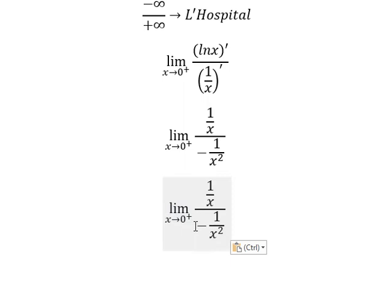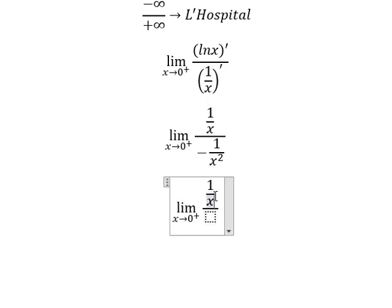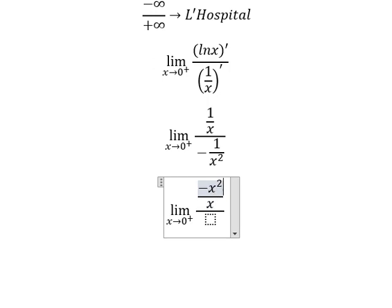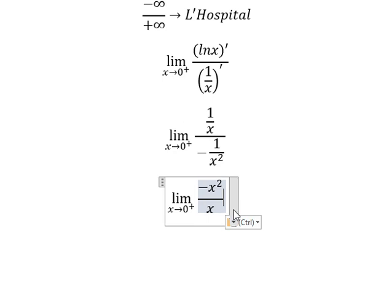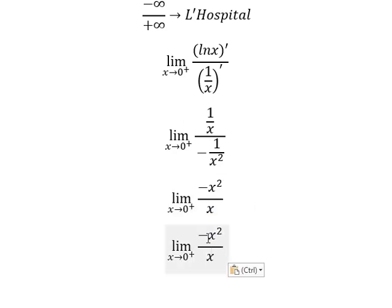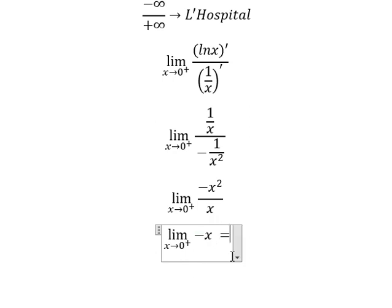So now this one I will put on numerator and you get negative x square over x. So we simplify and we have negative x. We put number 0 in here and we got 0.